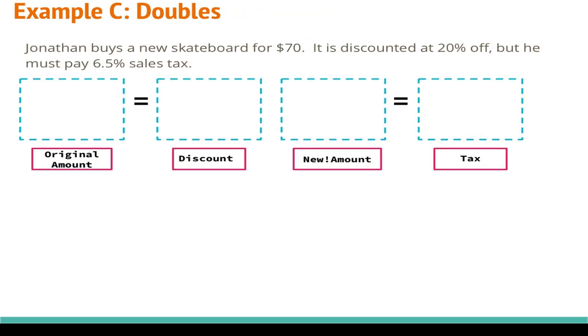Here we are at example C and it says Jonathan buys a new skateboard for $70. It is discounted at 20% off, but he must pay tax of 6.5%. So this one appears to have two parts to it. First we've got to figure out the discount of 20%, and then he has to pay a 6.5% sales tax. So we're going to be needing to do more than one proportion to solve this type of problem. He's buying a new skateboard at $70, and that's going to be 100%, the cost of the skateboard. We know our discount is 20%, and as we've learned before, our percents go on the bottom, our money goes on top. We don't know what the money is for this discount, so that's going to be x.